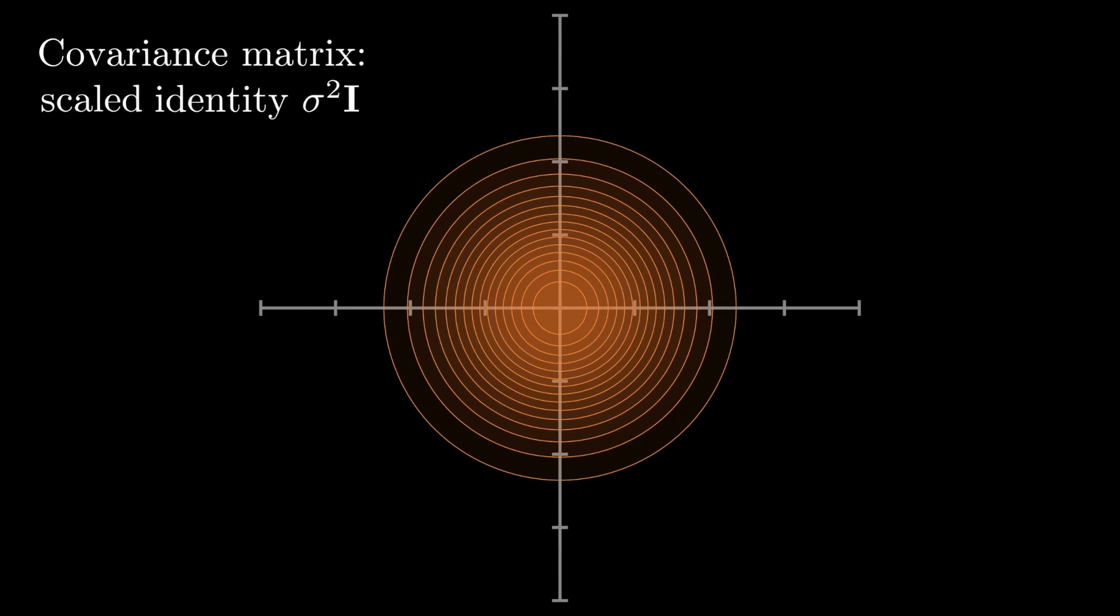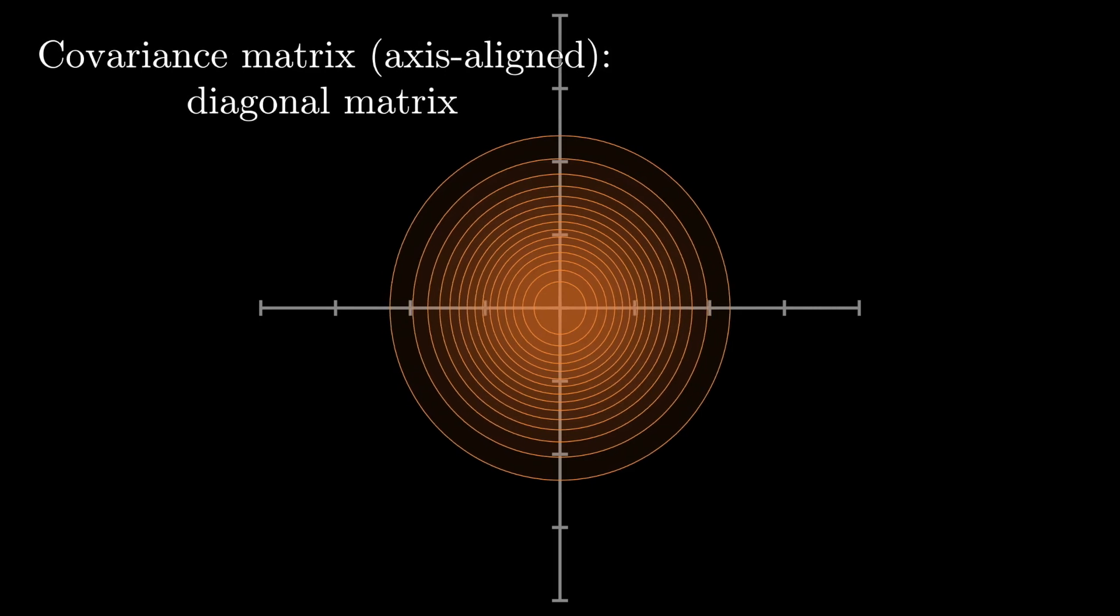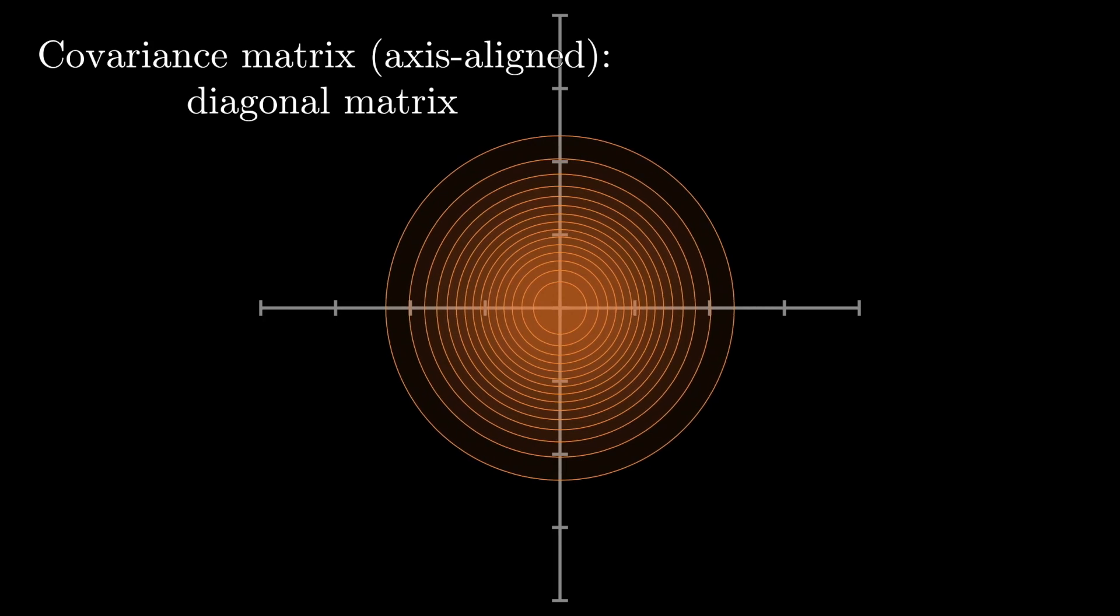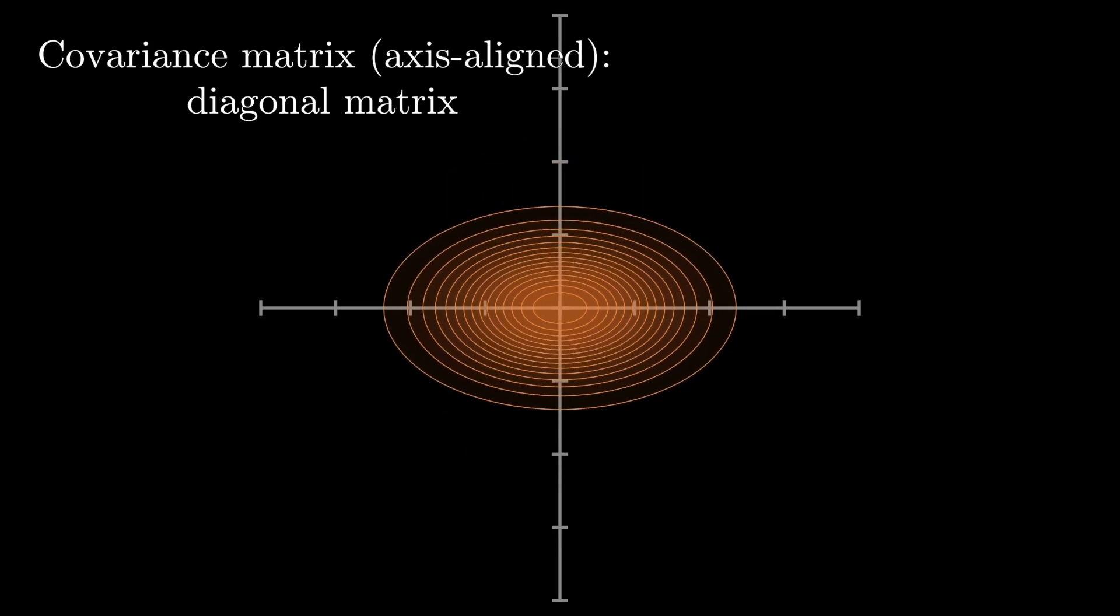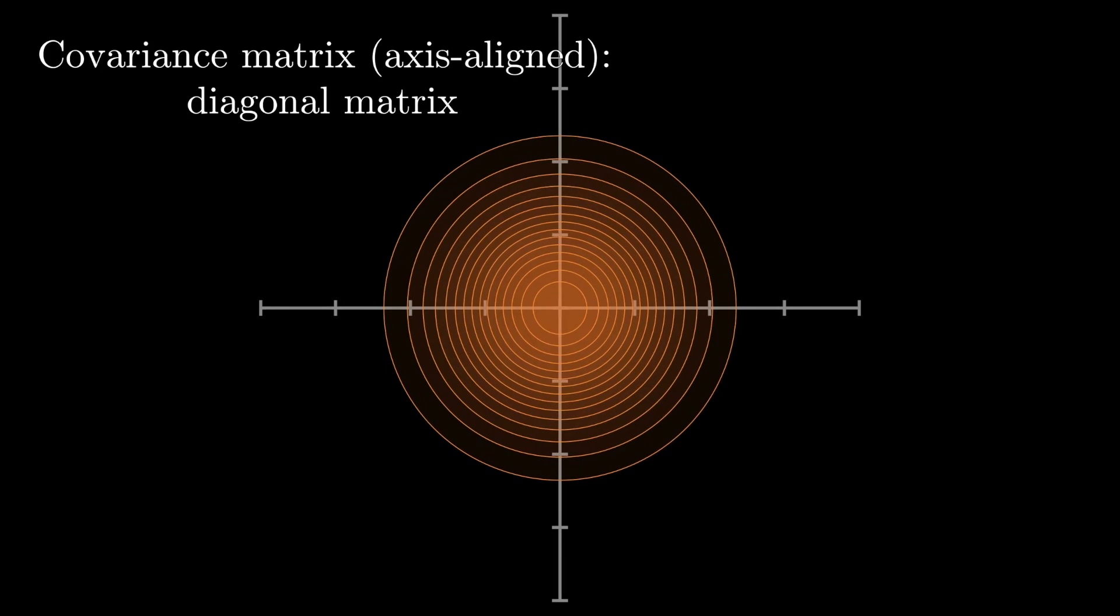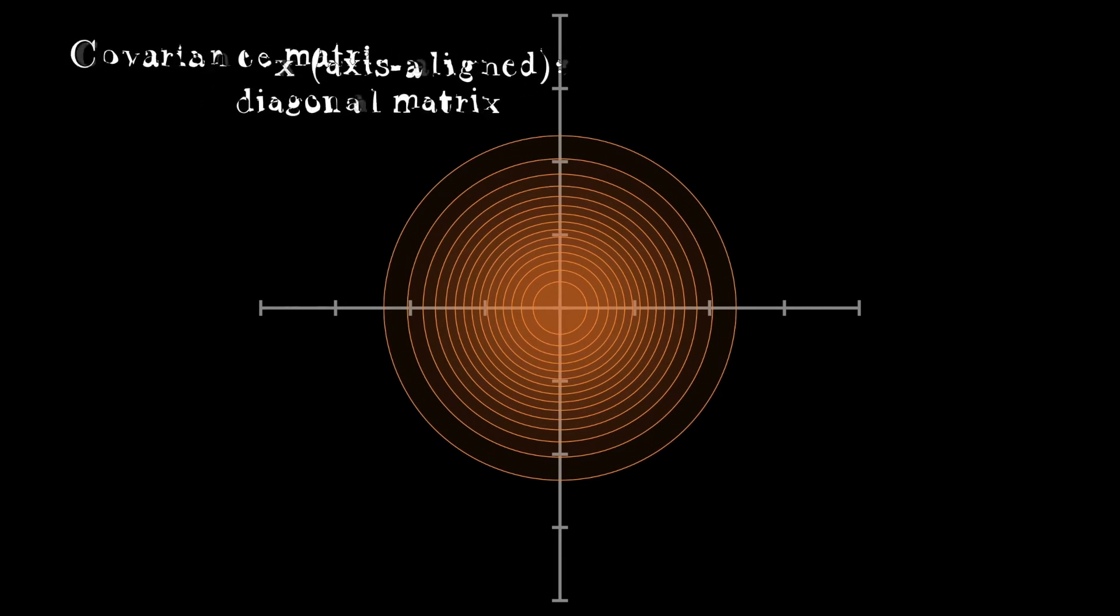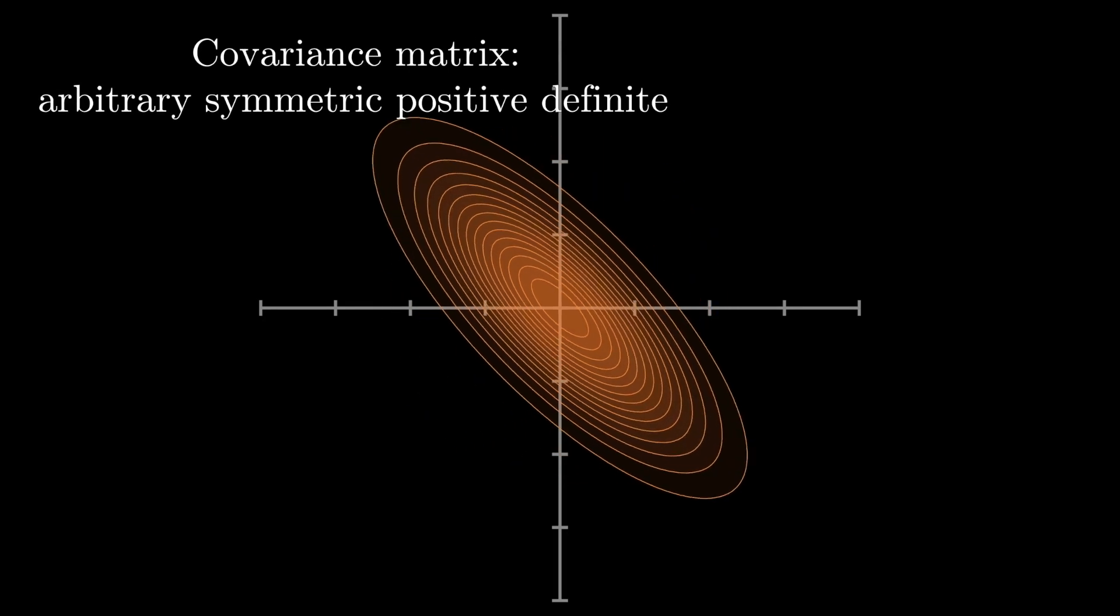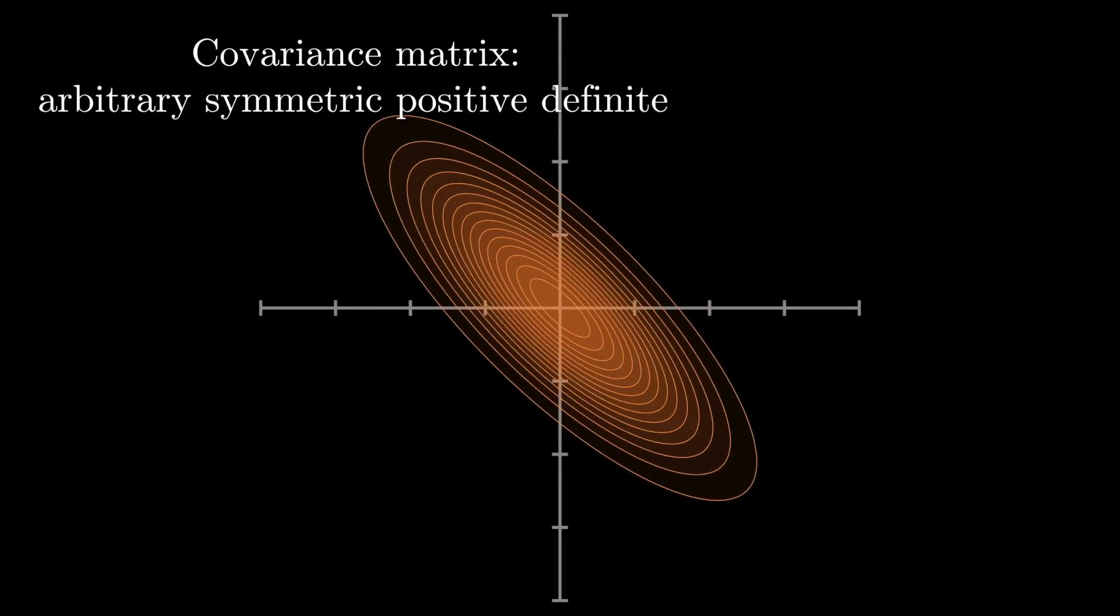The next step up in complexity is to allow the covariance matrix to be a positive definite diagonal matrix. This means that the components are still independent but now they have different variances. So here, the isocontours tend to be axis-aligned ellipsoids. In full generality, covariance matrices can be any positive definite matrix. So now the isocontours will be ellipsoids, but they'll be oriented in some arbitrary direction.